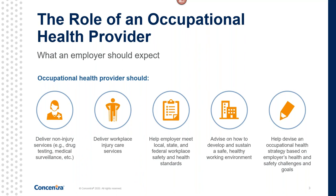The role of an occupational health provider — these are some of the things your health provider should help you do and what you should expect. They should deliver non-injury services like drug testing and medical surveillance. They should deliver workplace injury care services, help employers meet local, state, and federal workplace safety and health standards, advise on how to develop and sustain a healthy, safe working environment, and help devise an occupational health strategy based on the employer's health and safety challenges and goals. Achieving the best results requires clear communication and partnership between you and your provider. Clinical informatics allows us to identify, measure, affect, and perpetuate best practices both among our internal clinicians, while clear communications allow us to demonstrate values and core competencies to our external clients.